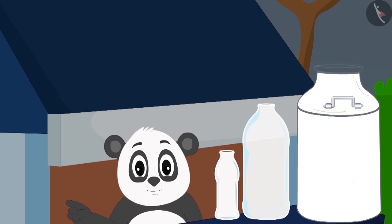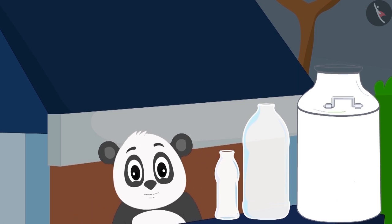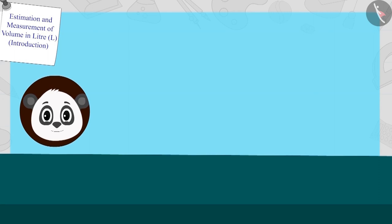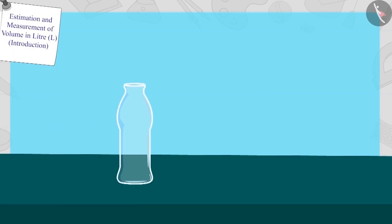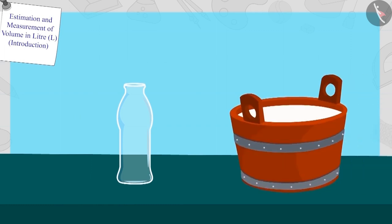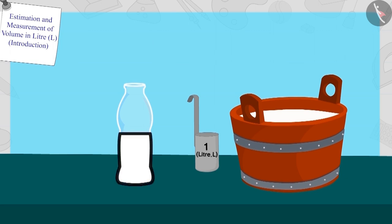Golu has bottles in two sizes and large cans. Golu first took one bottle of this size. He poured milk into the bottle using his one-liter measuring scale. The bottle was this full after pouring one liter of milk. Now Golu poured one more liter of milk into that bottle. This time the bottle was completely full.